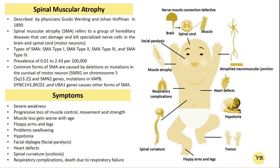Neurological examination includes checking muscle strength, reflexes, tone, and coordination. In SMA, muscle strength usually decreases progressively and reflexes may be diminished. Electrical signals from nerve conduction studies may be abnormal due to the loss of motor neurons. The definitive way to diagnose SMA is through genetic testing to identify mutations in the SMN1 gene, which is responsible for the production of the survival motor neuron protein.